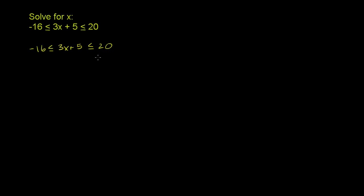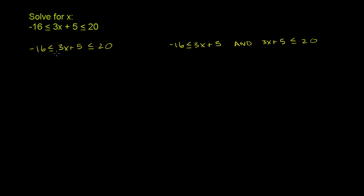One way is to solve this compound inequality all at once. The other way is to think of it as two separate inequalities that both need to be true: negative 16 has to be less than or equal to 3x plus 5, and 3x plus 5 needs to be less than or equal to 20. These two statements are equivalent, though this form might seem more familiar since we can independently solve each inequality.